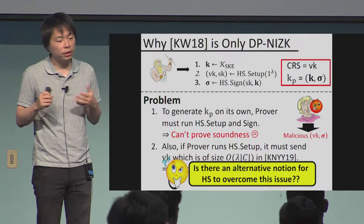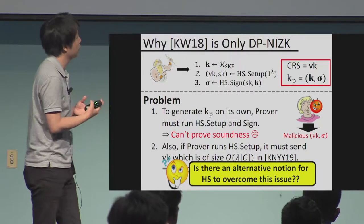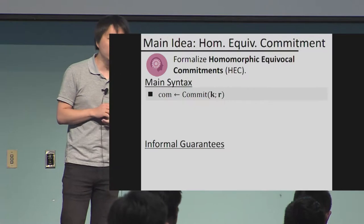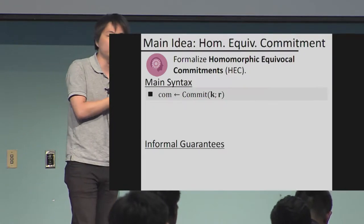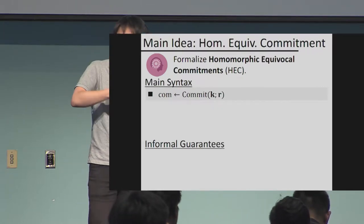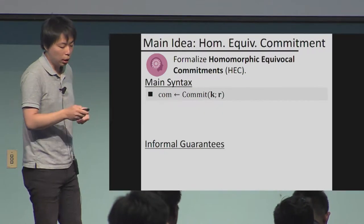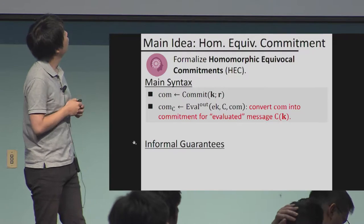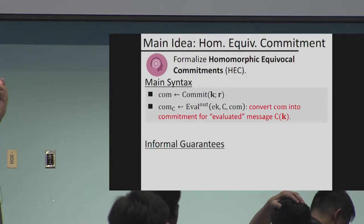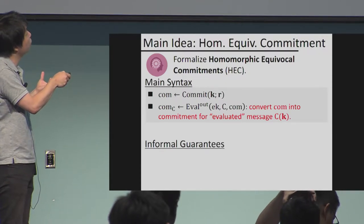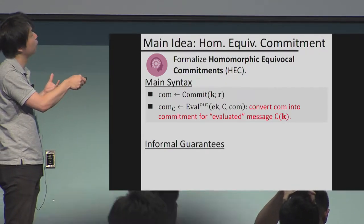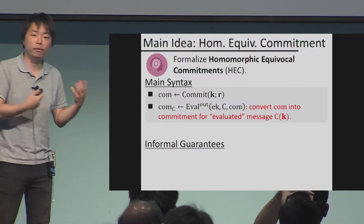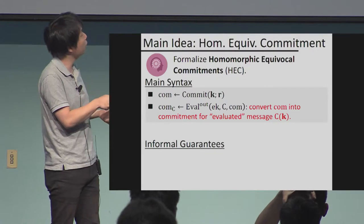We asked: is there an alternative notion to homomorphic signatures to overcome this? We formalized the notion of homomorphic equivocal commitment (HEC), which is similar to homomorphic signatures but designed to work around this problem. The main syntax: you can commit to a key or bit string with randomness R as the opening. The homomorphic property lets you homomorphically convert this commitment into an evaluated commitment C(K) — a commitment to C(K) — and create a homomorphic opening using the original randomness R and circuit C.